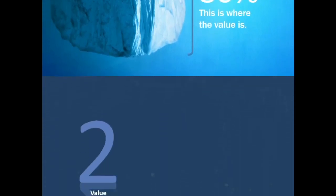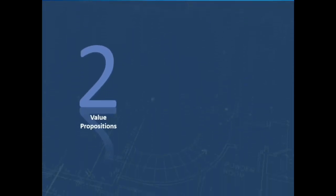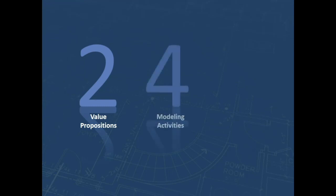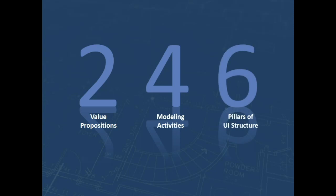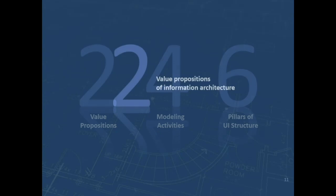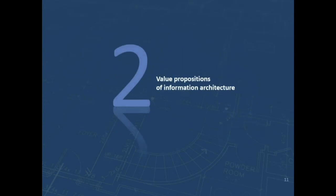But this is where — in the system — you'll find the true value proposition of information architecture. I'd like to go over two value propositions for modeling activities and six pillars of user interface structure.